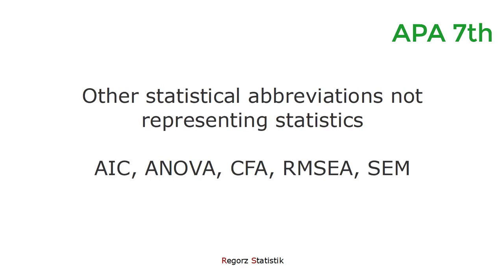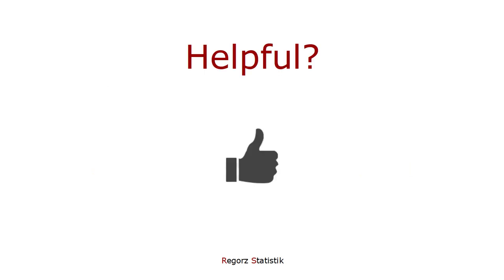However, other statistical abbreviations that do not represent statistics have to be defined. This includes statistical techniques such as ANOVA, CFA, SEM, or fit indices like AIC or RMSEA. For those abbreviations, you have to define them before you use them. And since tables have to be self-explanatory, you have to define them in the note of a table if you use them in a table. Those are some main changes when it comes to numbers in APA 7.